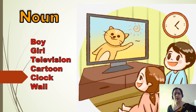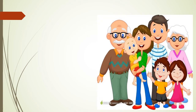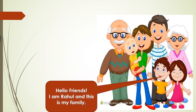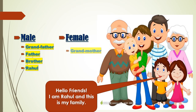You have already studied that a noun is the name of a person, place, animal, thing, or feelings. Now, let's meet Rahul's family. Rahul is a boy who lives with his grandfather, grandmother, father, mother, and his younger brother and younger sister.